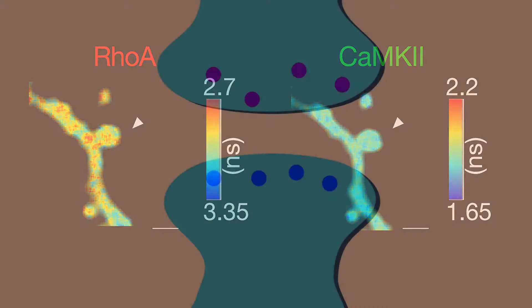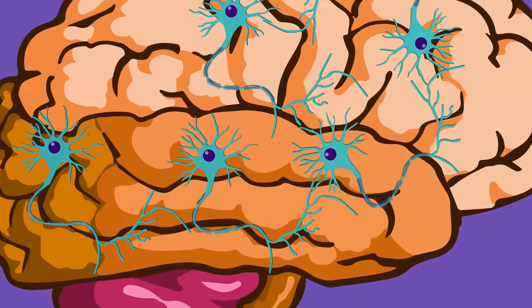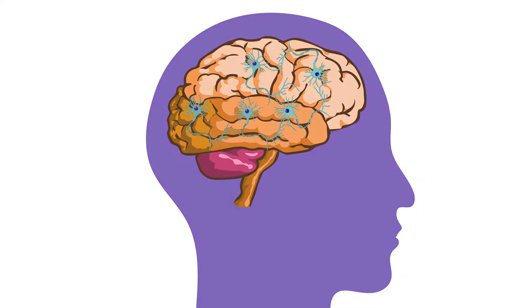Now, scientists can accurately quantify how multiple proteins behave in neurons over time and space, opening up opportunities to learn much more about how we learn and use memory.